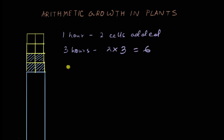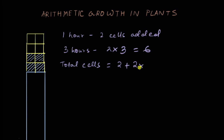Now if I were to ask you what is the total number of cells after three hours, you have to remember that we started off with two cells in the beginning. So two plus two times three, which is two plus six, which is equal to eight cells — which is exactly what we see here. There are eight cells.